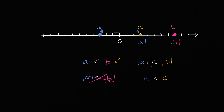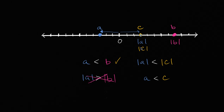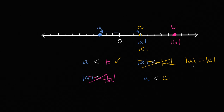Next statement: the absolute value of A is less than the absolute value of C. We already know that the absolute value of A is the same value as C. The absolute value of a positive number is just that number, so the absolute value of C is that same point. We see that the absolute value of A is equal to the absolute value of C — it's not less than. So we mark that off. We could have written that absolute value of A equals absolute value of C; that would have been true.